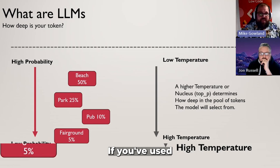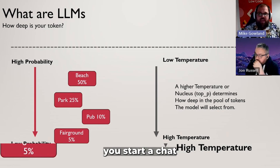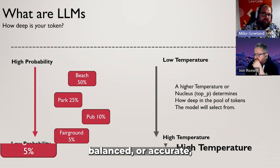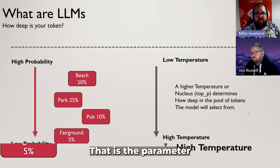If you've used Bing Chat Enterprise and looked at the option before you start a chat that says 'do you want to be more creative, balanced, or accurate?' — that is a control of temperature. That is the parameter that you're changing.